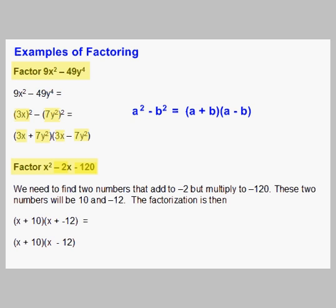Those two numbers are two apart and they happen to be 10 and -12 because 10 + (-12) is -2, and 10 times -12 is -120. So our factorization is going to be (x + 10)(x - 12).